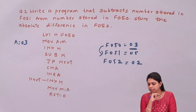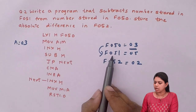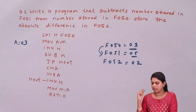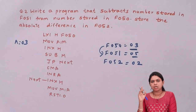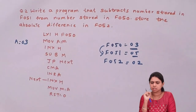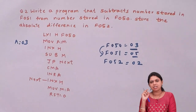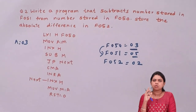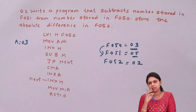Next is SUB M — subtract memory from accumulator. The memory now points to F051, which contains 05. So I subtract 05 from the accumulator. The answer is 03 minus 05, which would be negative in this case. We check whether the answer is positive or negative because we need to store the absolute difference in F052. If the answer is positive, we directly store it. If negative, we take the one's complement of that number and add 1 to get the positive value.